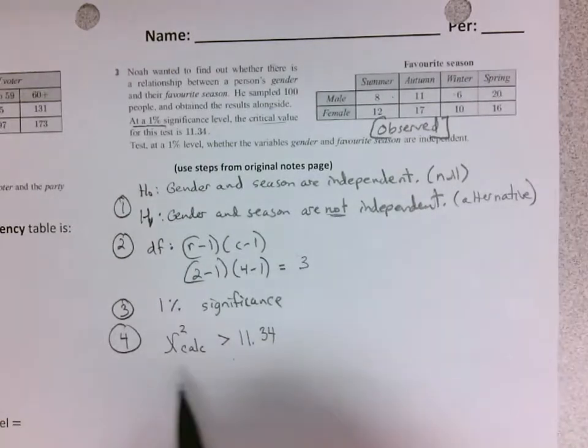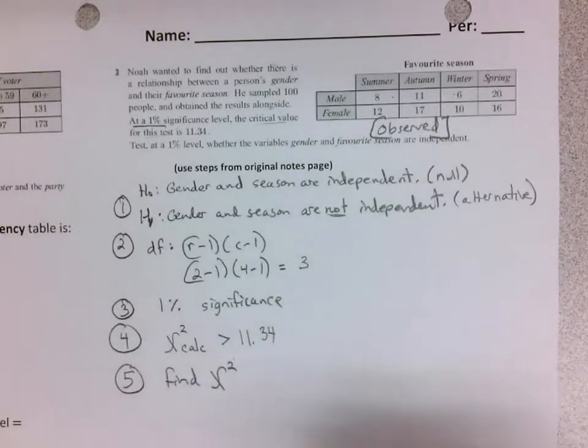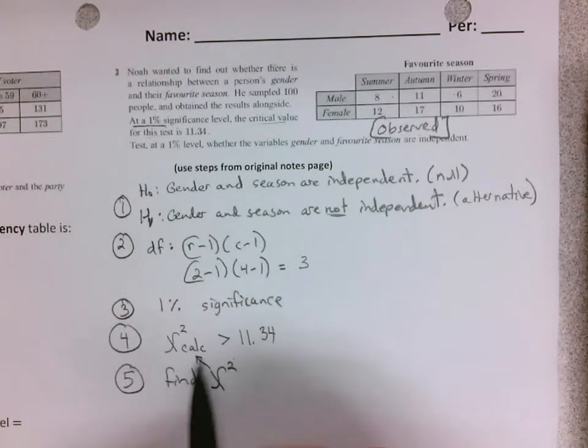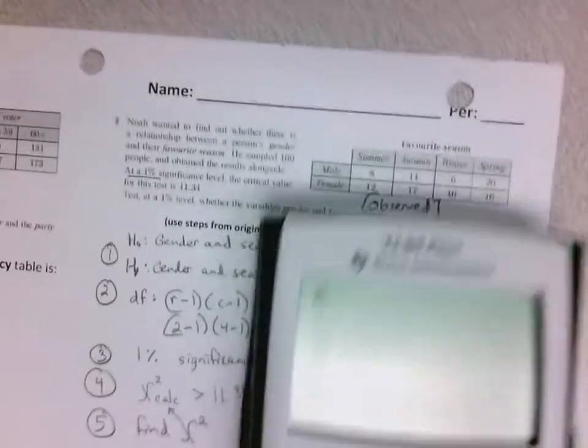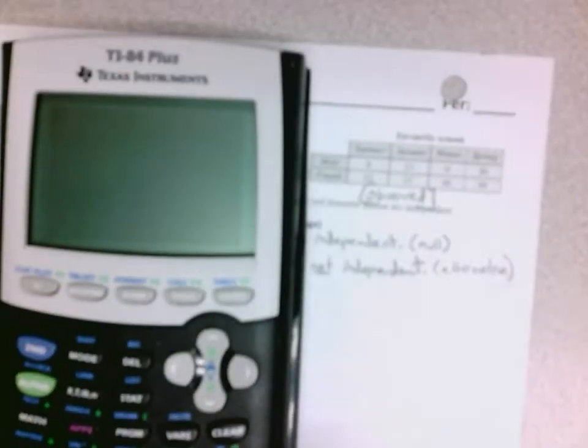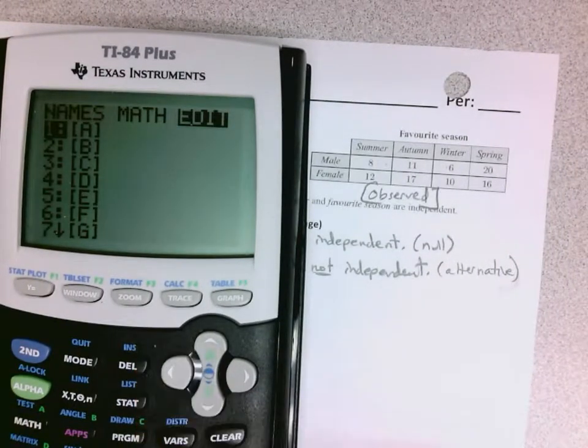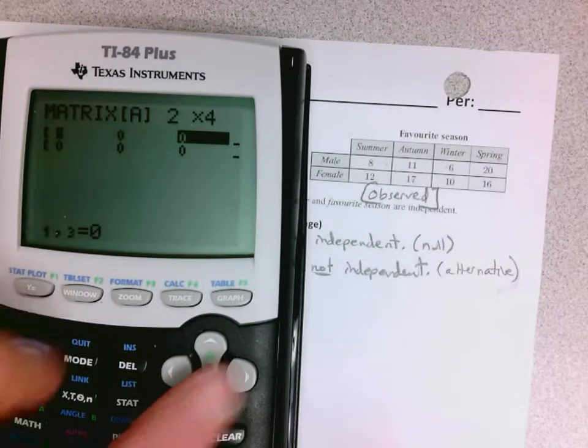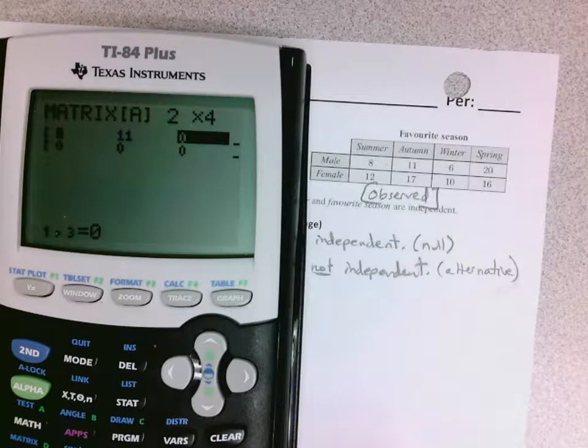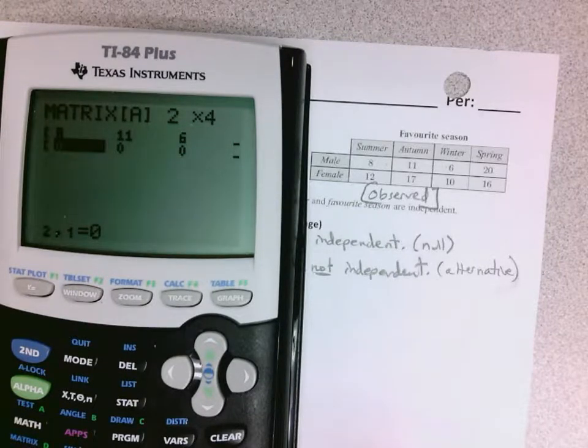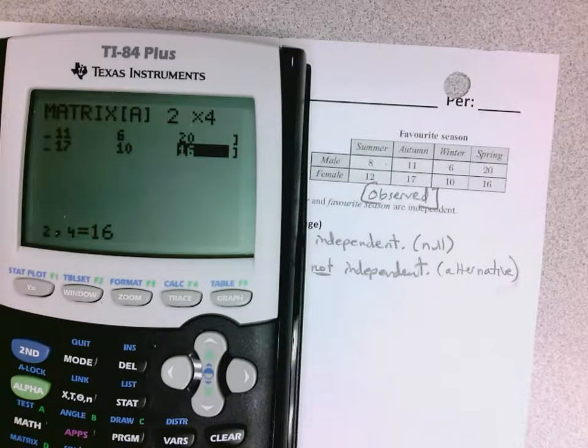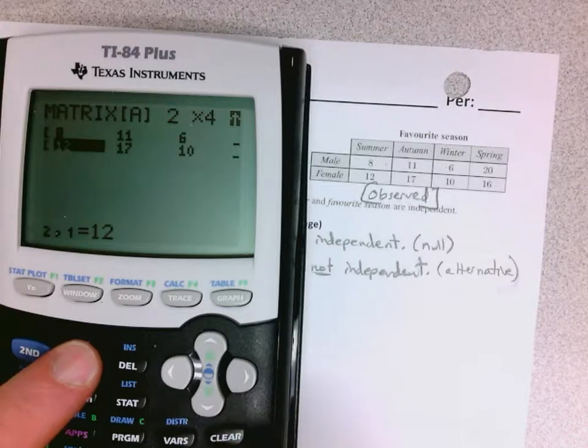So step five is find chi squared. We'll do another one of these the long way, but right now the way you're going to find chi squared is using your calculator. So when we say chi squared, we're finding this calculated value. So go to the matrix, whichever one you want, put in your numbers, so two rows, four columns. Put your numbers in. Make sure you put them in right. And then I put them in matrix A. You can put them in whatever matrix you want to.